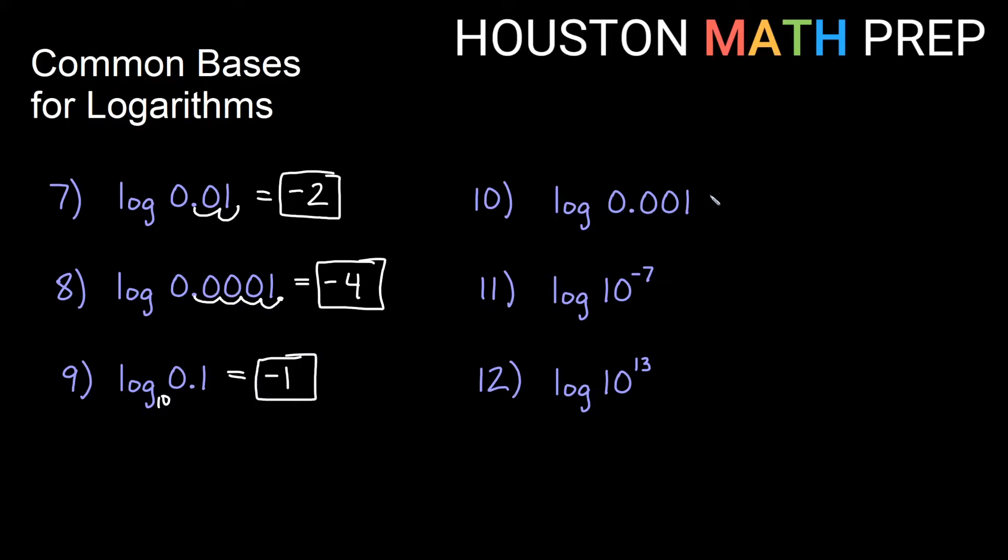For this one here, counting the decimal places would give us that this is the negative third power, or if you use that scientific notation idea of how many would we have to move it over to get a number between 1 and 10, then we would have to move it over three places to the right.